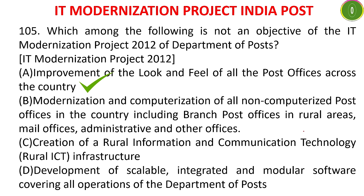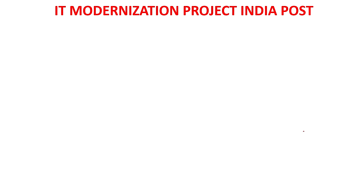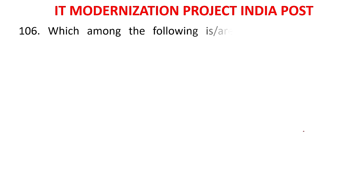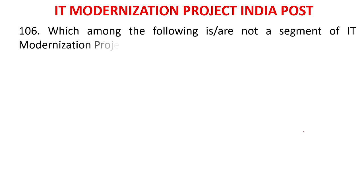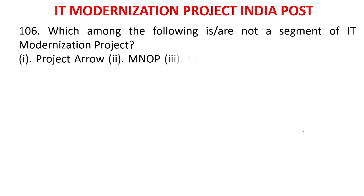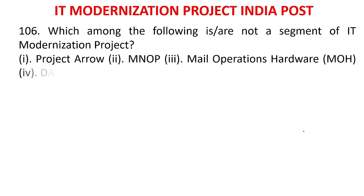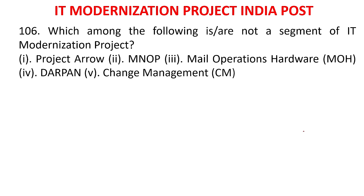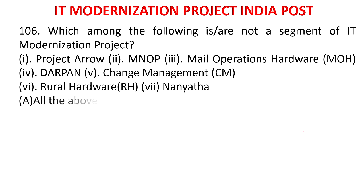Project Arrow is a different project from the year 2008, under which painting was done and logo was changed in 2009. MCQ 102: Which among the following is/are not a segment of IT modernization project? 1) Project Arrow, 2) MNOP, 3) Mail Operations Hardware, 4) DARPAN, 5) Change Management, 6) Rural Hardware, 7) NANYATA. Options: A) All of the above; B) 1, 4, 6 only; C) 1, 2, 7 only; D) 3, 4, 5 and 6 only.